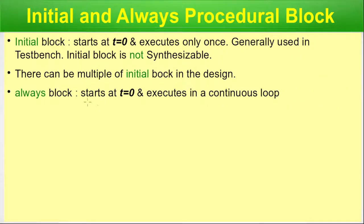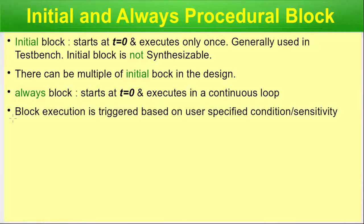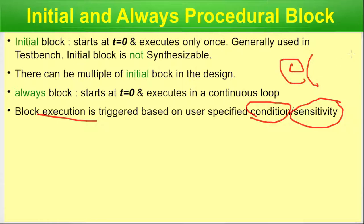The always block starts at t=0 and executes in a continuous loop — it is always on and runs in a continuous mode. Block execution is triggered based on a user-specified condition or sensitivity list, written with the @ symbol followed by the condition in parentheses. For example: always @(posedge clock) — at each positive clock transition, the always block is sensitized and the code inside it executes.